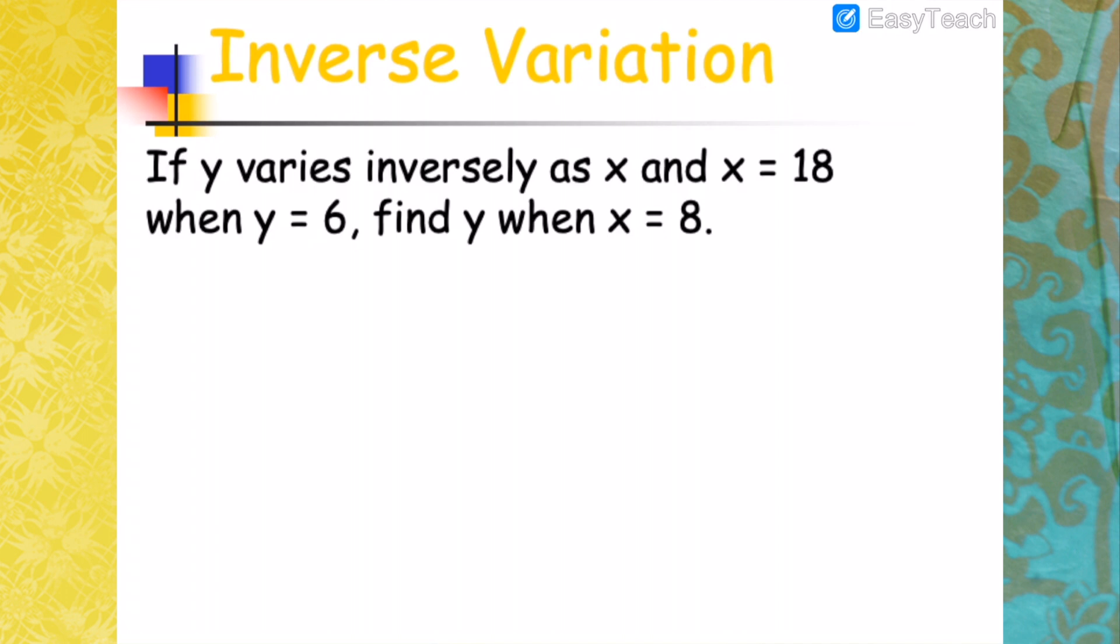Let's have another example. If Y varies inversely as X, and X is 18 when Y is 6, find Y when X is 8. Again, I'll show you the two ways to solve this. First way is solving for the constant K. Rearranging, you'll have K equals YX. Solving K, X is 18 when Y is 6. 18 times 6 will be 108. That is your value of K.